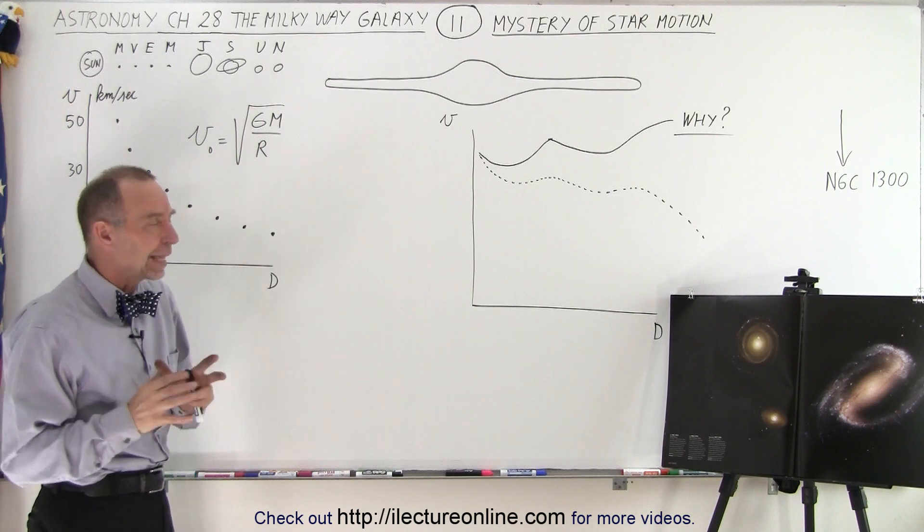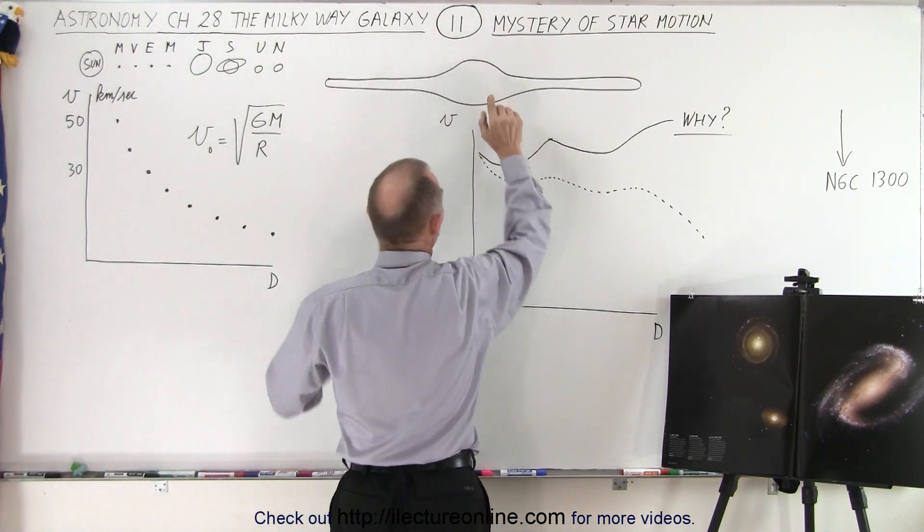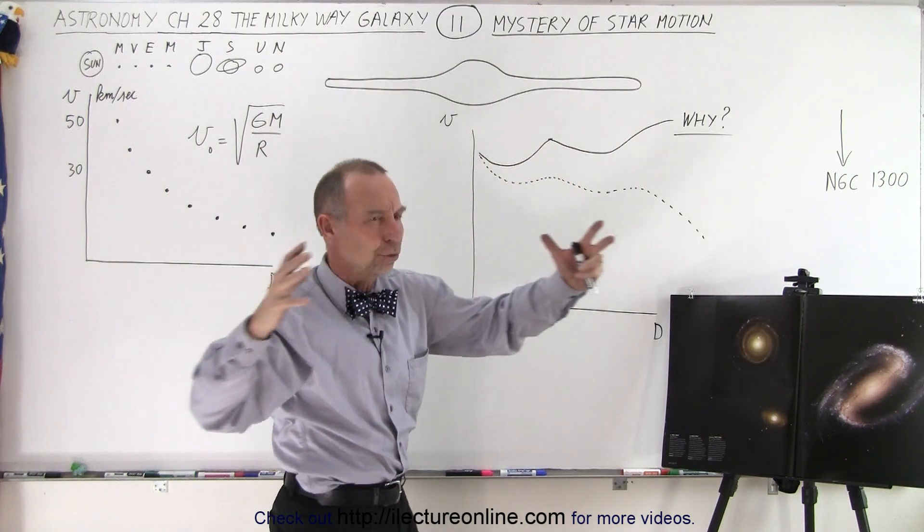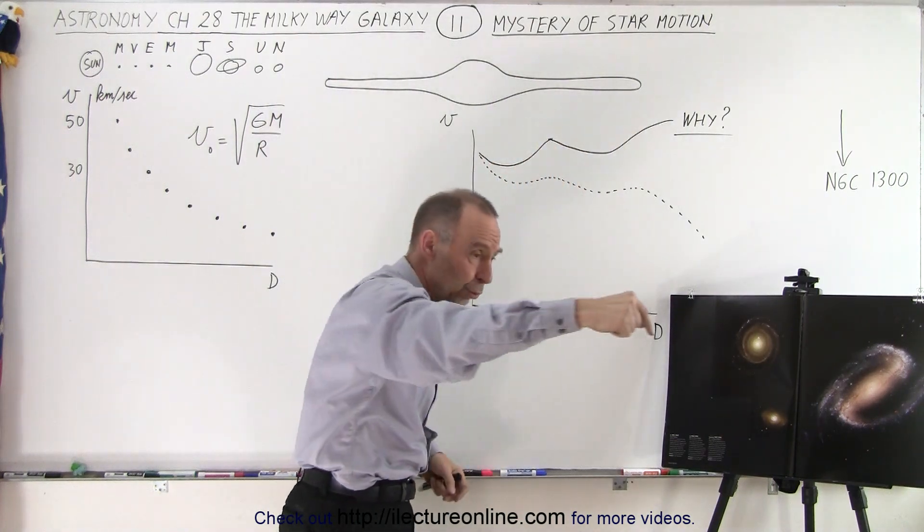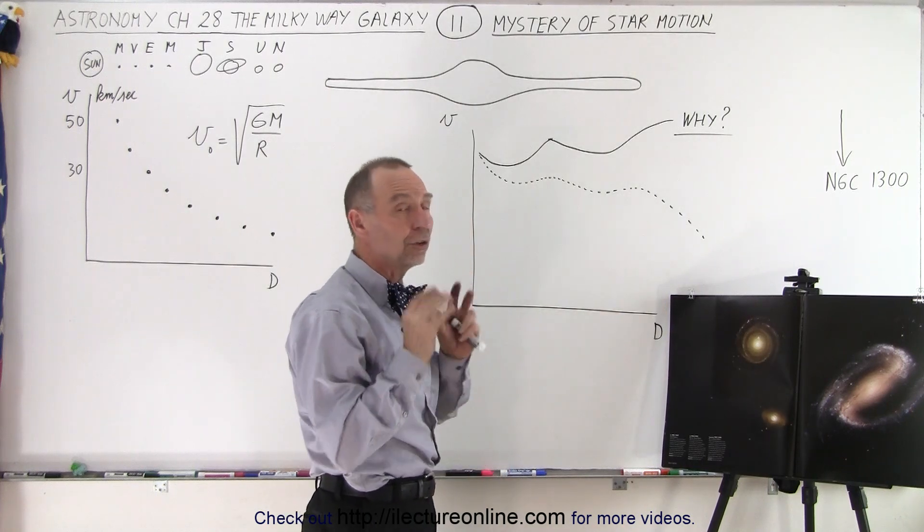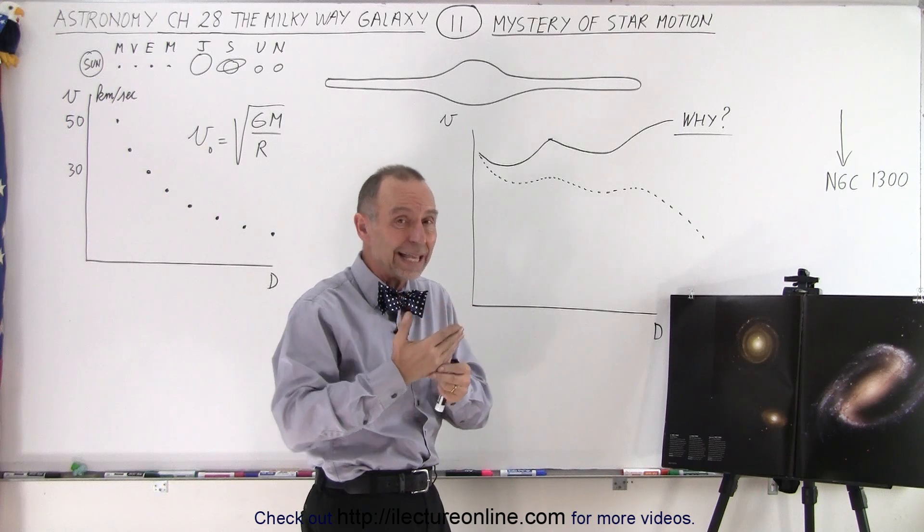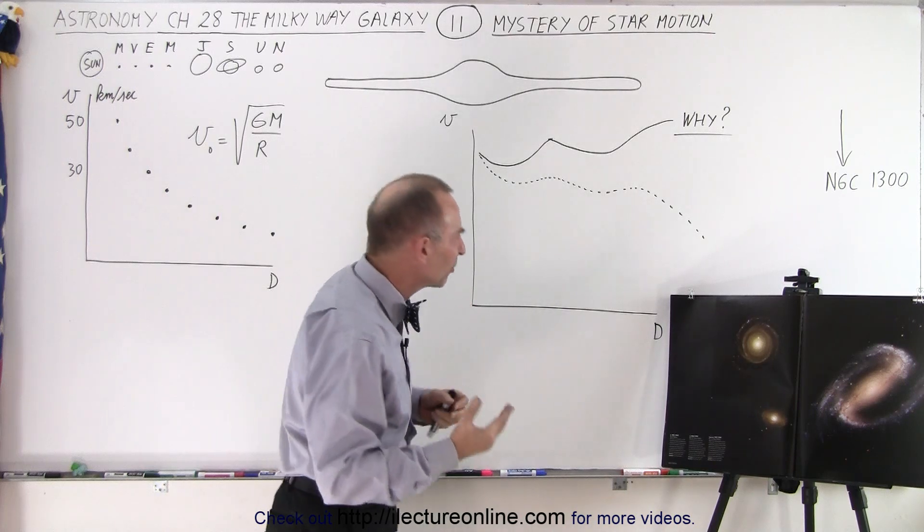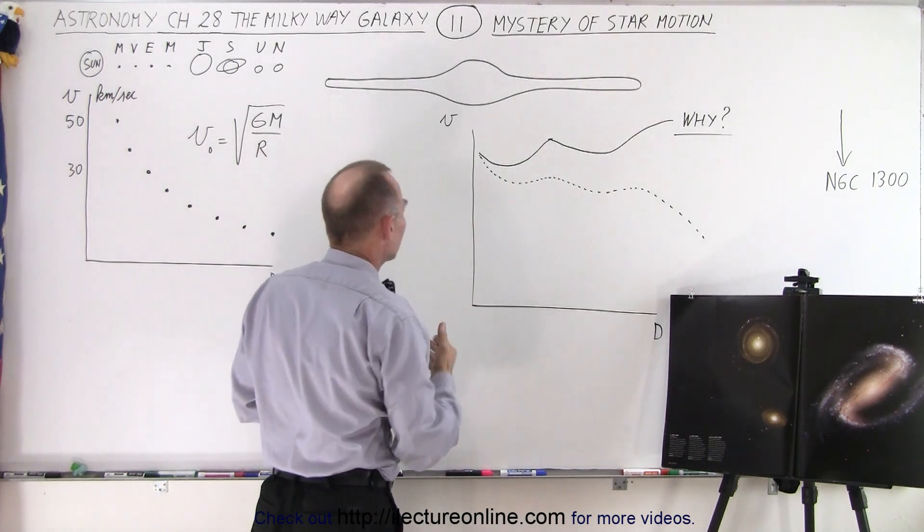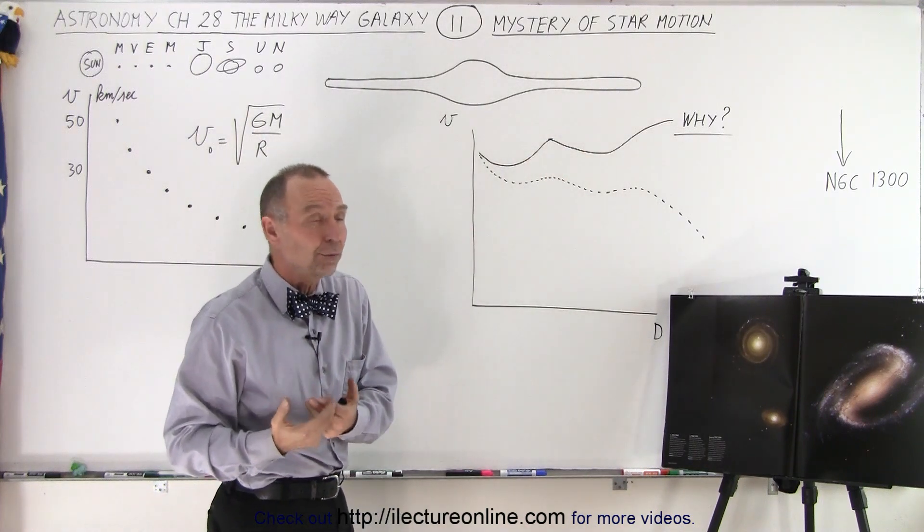We expect kind of a similar behavior with the stars in the galaxy as you go further out. Remember that the whole galaxy turns around - our sun takes about 250 million years to take one trip around the galaxy. The stars that are further out take longer, and the stars that are closer take not as long. You expect kind of a similar relationship - the farther out you go, the slower the star should be moving.